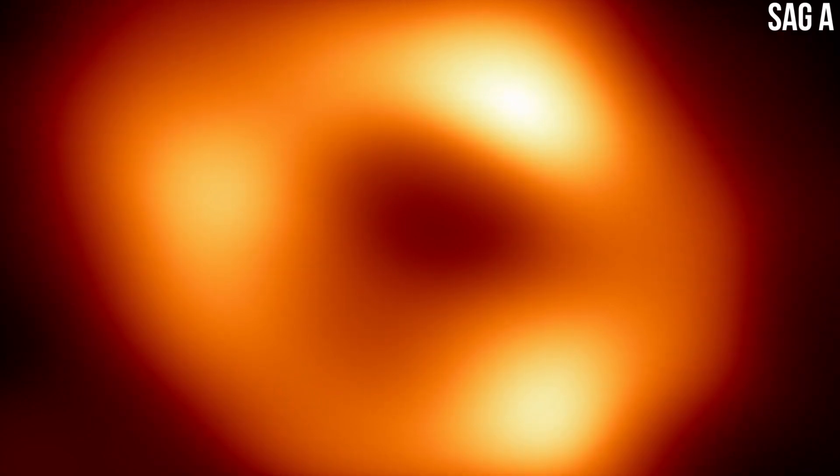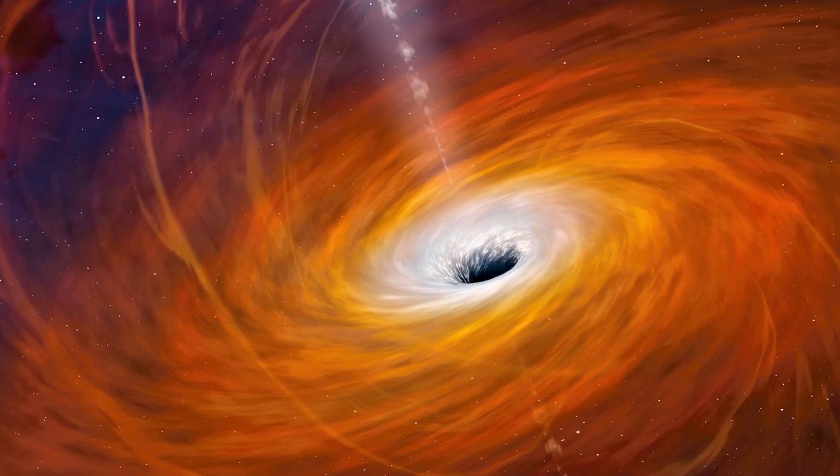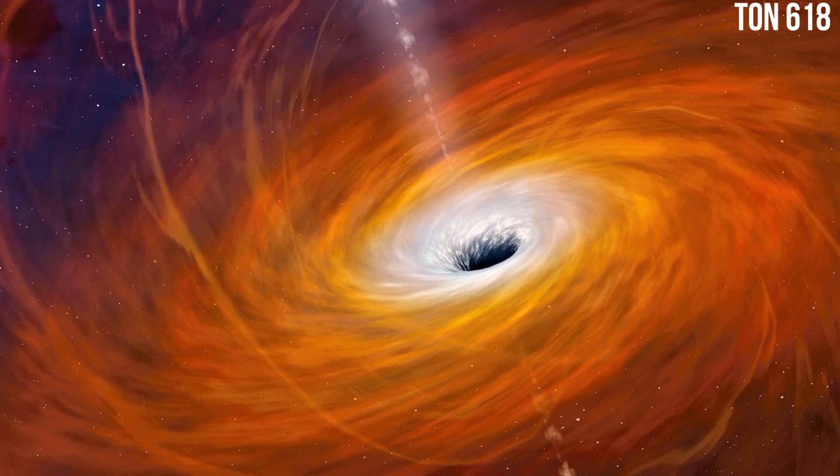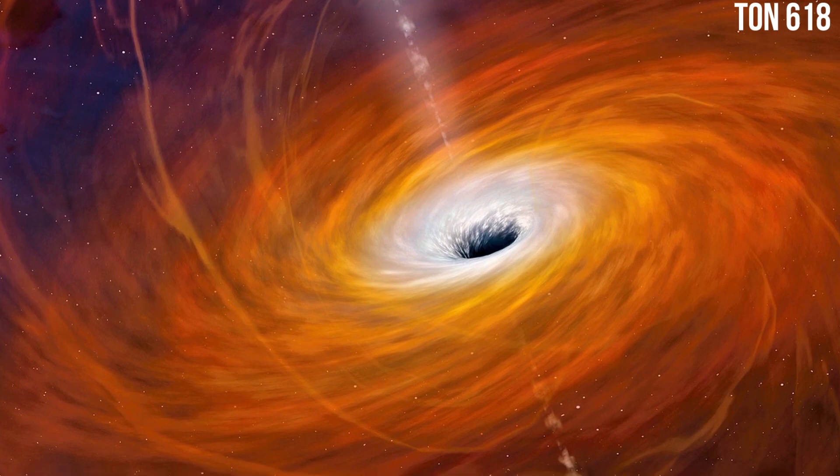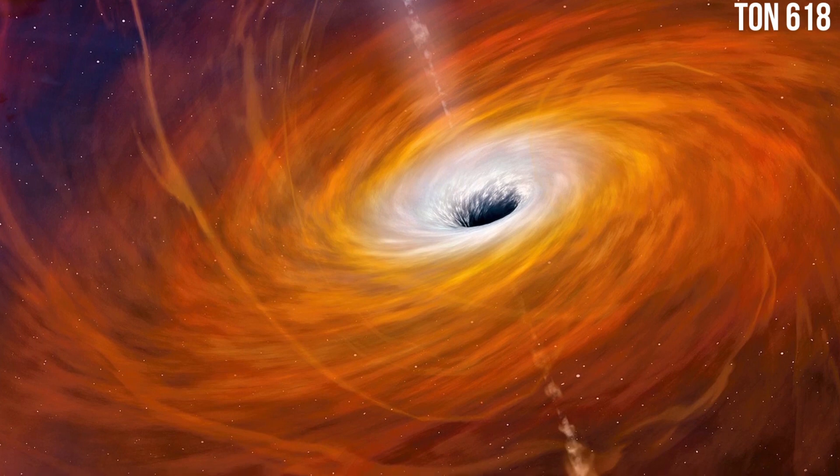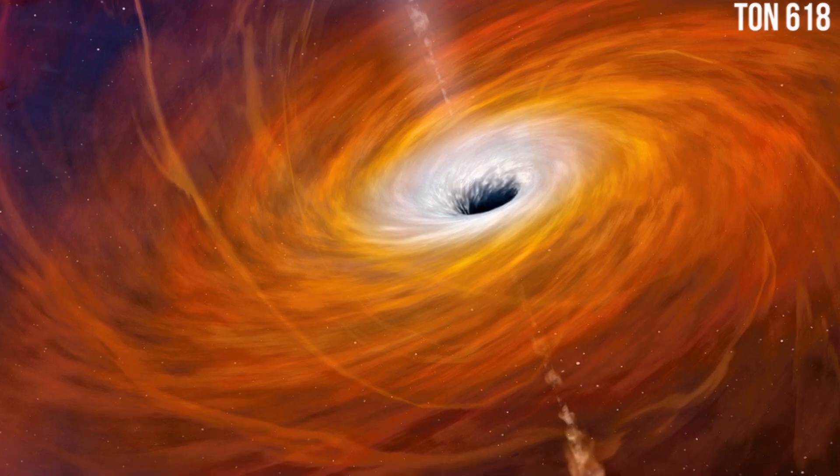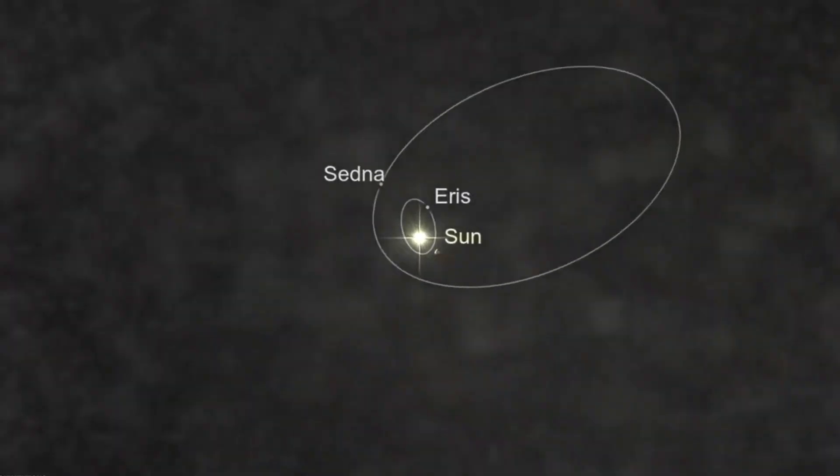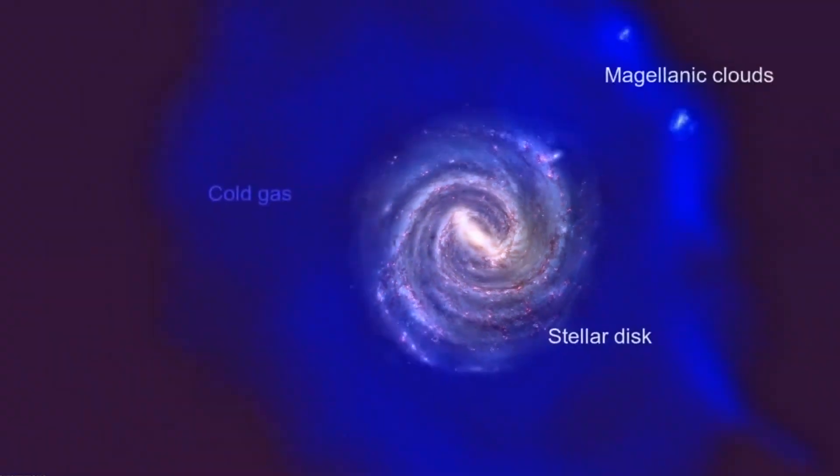The diameter of Sag A is estimated to be 14 million miles. TON 618 is estimated to be 262 billion miles large and to weigh 66 billion solar masses. That's more than 43 times the diameter of the entire solar system. But where do supermassive black holes come from, and how do they manage to gather such mind-boggling quantities of mass?